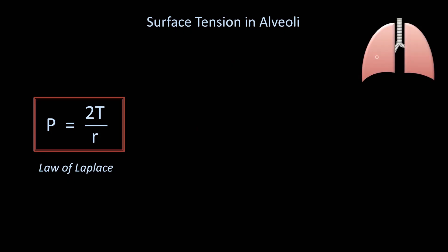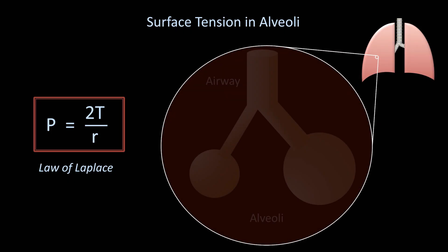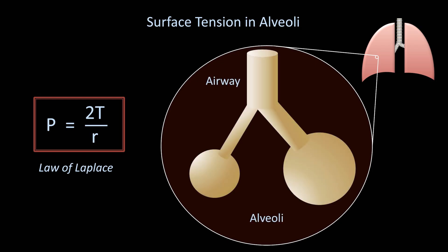If we zoom way in, we will see that the two lungs are actually composed of roughly a billion sacks of air called alveoli, which are connected via an intricate branching network of air passages. The alveoli are the site in the lungs where gas exchange occurs, and it's critically important that they stay open and don't collapse, or else oxygen will not be able to make its way into the bloodstream.